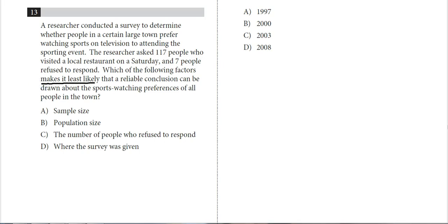So let's kind of go through here and see what the problem was with this survey. Sample size, I think we're fine. We have 117 people, which is more than enough people. The population size, they don't really tell us enough information for that to be a problem. The number of people who refused to respond, only seven people didn't respond. So that really doesn't seem like too big a number.